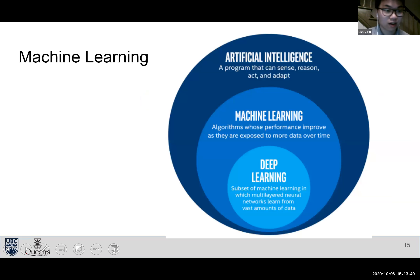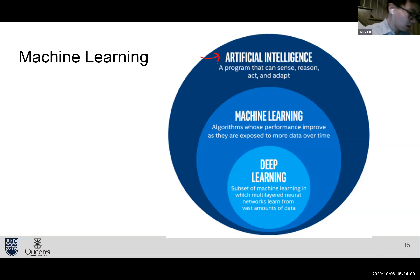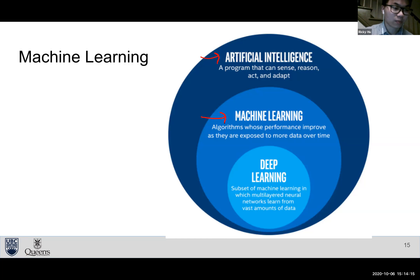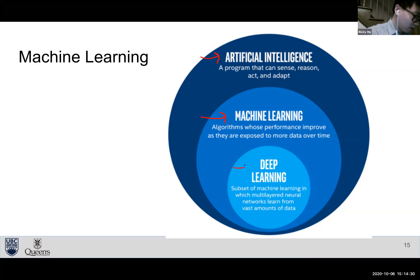The cool kid on the block right now is machine learning. We've defined AI — something that senses its environment and completes a task. Machine learning is just one method of applying AI, where every time the machine completes a task it looks at how well it's doing and updates itself. Like a robot learning to play basketball — it shoots, measures how much it missed, and adjusts. Deep learning is just machine learning with a lot of intricate intermediate math steps.